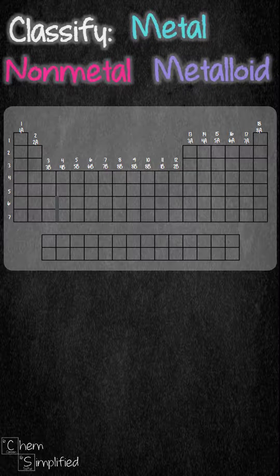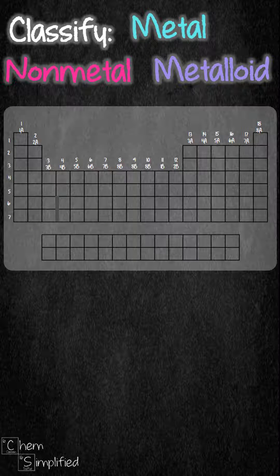We can easily classify any elements in the periodic table as metal, non-metal, and metalloid as long as we can remember which elements are metalloids.